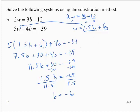Now that we know the value for b, let's substitute into the other equation. w equals 1.5b plus 6. So w would equal 1.5 times negative 6 plus 6.